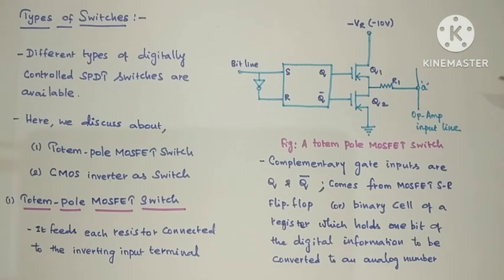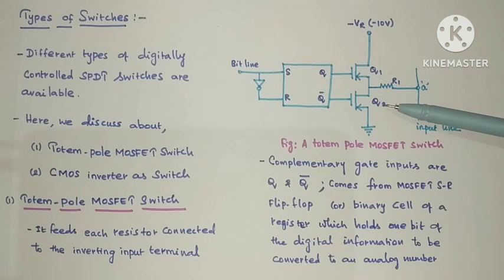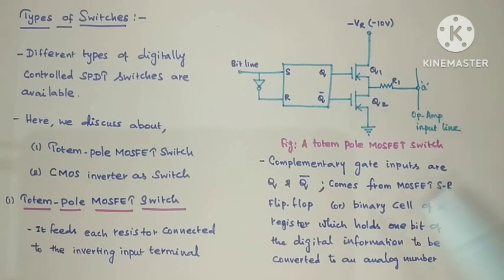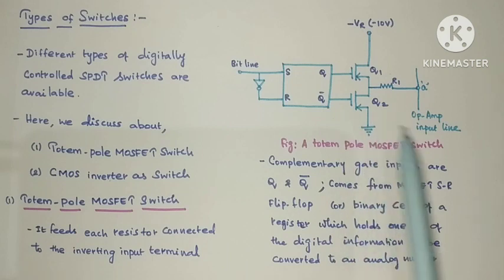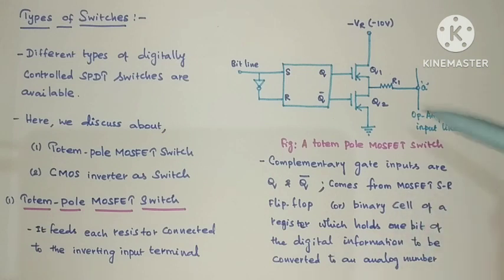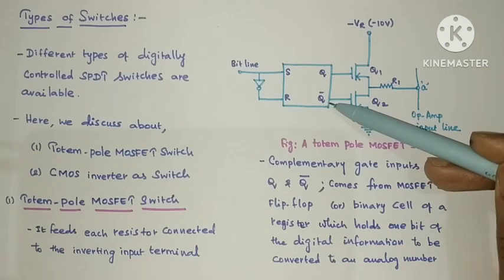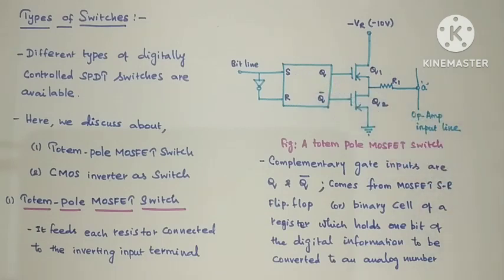In this circuit, Q1 and Q2 are the complementary gates. The inputs to these gates are Q and Q-bar. These complementary gate inputs Q and Q-bar are coming from a MOSFET SR flip-flop, or more specifically from a binary cell of a register which is holding one bit of digital information. So the one bit of information you are going to convert into an analog value is held in a register.